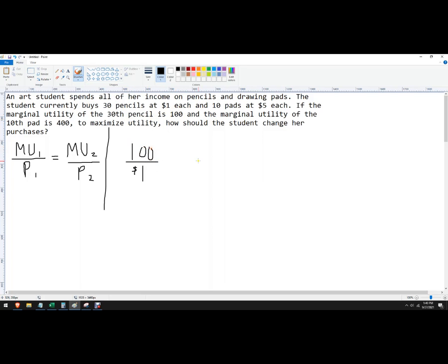We're told that we might read this out of the table, but in this problem we're told that this is a word problem. The price of the pads is $5 each. And we're buying 10 pads. What is our marginal utility of the 10th pad? That's 400.